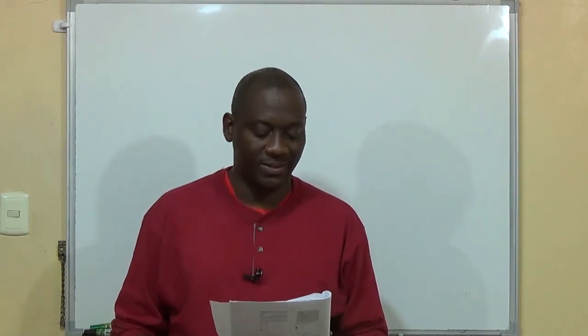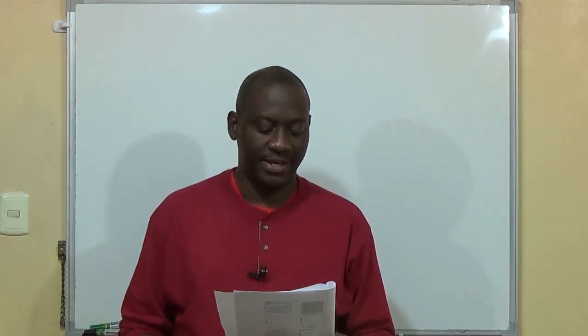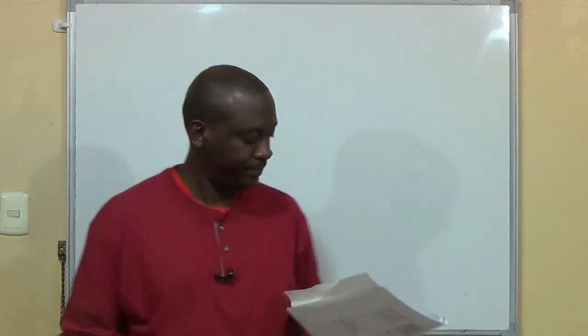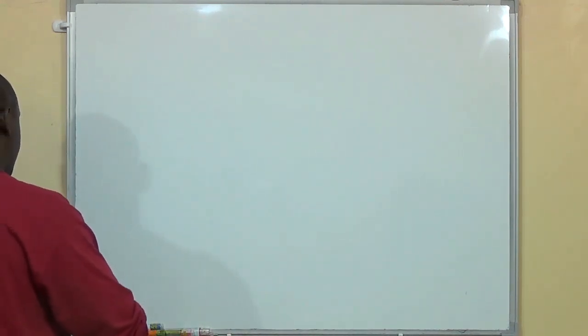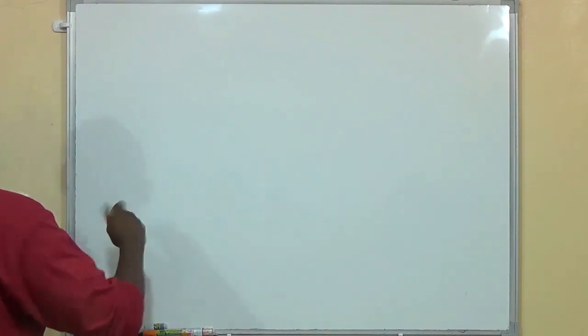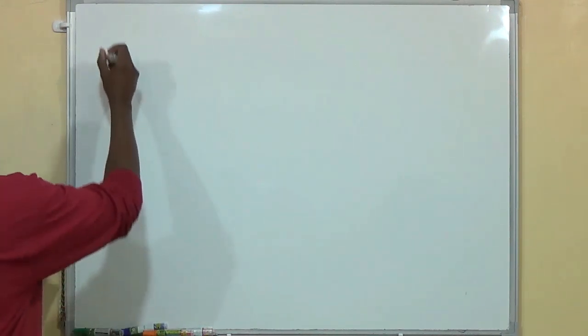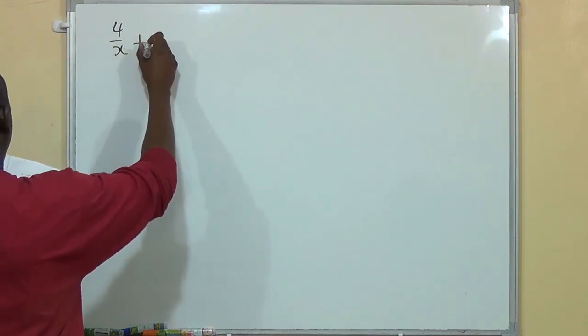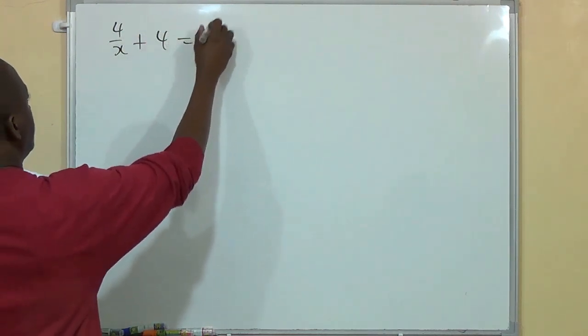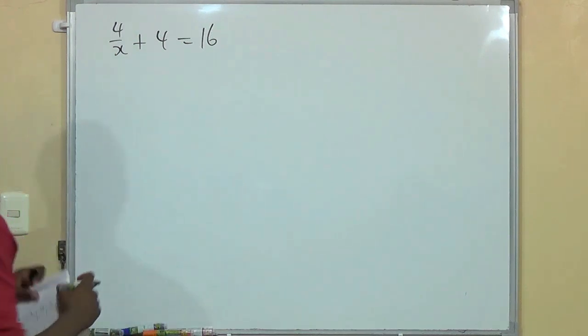If 4 over x plus 4 is equal to 16, then x is equal to? Let me work it out. So the question is 4 over x plus 4 is equal to 16, and I want to define x.